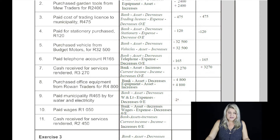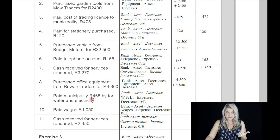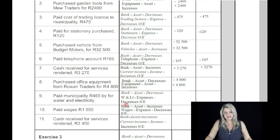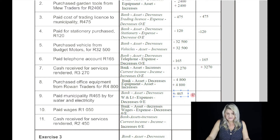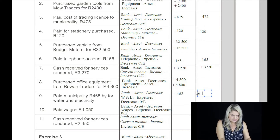Now number nine: paid municipality 465 Rand for water and electricity. The two accounts affected are bank, because we're making a payment, and water and electricity. Water and electricity is an expense, and what do we know about expenses? It decreases owner's equity. The bank is an asset — it decreases because we're paying for something by 465 Rand. And the expense decreases owner's equity by 465 Rand.